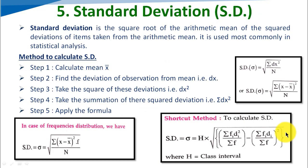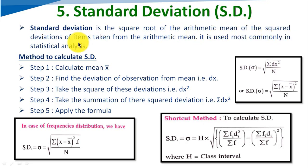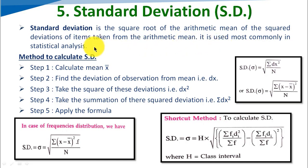Now, what is standard deviation? It is the square root of the arithmetic mean of the squared deviations of items taken from the arithmetic mean. It is used most commonly in statistical analysis.